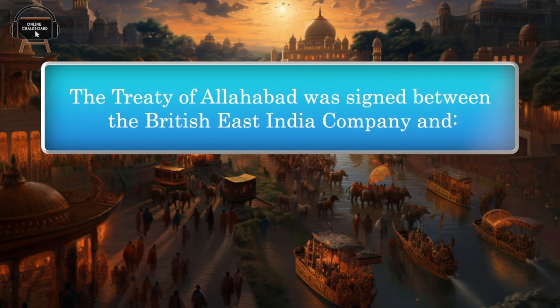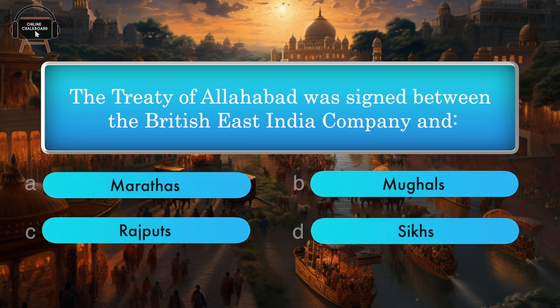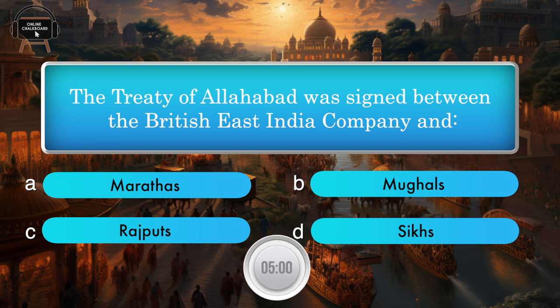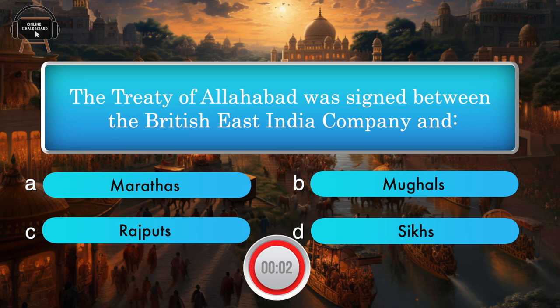The Treaty of Allahabad was signed between the British East India Company and — Marathas, Mughals, Rajputs, Sikhs. Answer: Marathas.